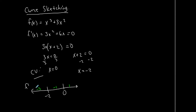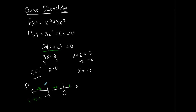Because this is an f′ number line, we're going to plug these test numbers into the first derivative. We just want to know the sign — is it positive or negative? Plugging −3 into the factored form: 3×(−3) is negative, and (−3 + 2) is also negative. A negative times a negative is positive. When the first derivative is positive, we are increasing along that interval.